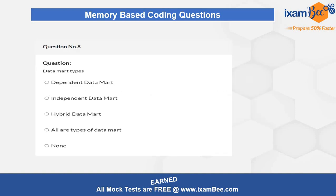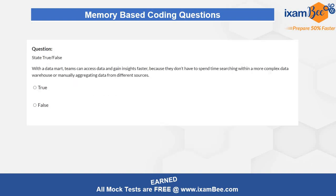Question eight is about data mark types — you have to identify which of the listed items qualify as types of data marks. Question nine presents a statement that you must read and identify as true or false. If the statement is true, select true; otherwise, select false. Take your time, pause the video, understand the question, and then mark your answer.